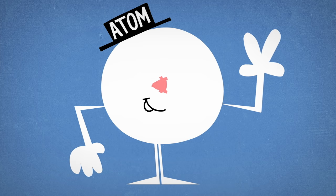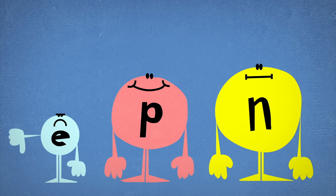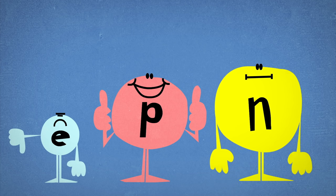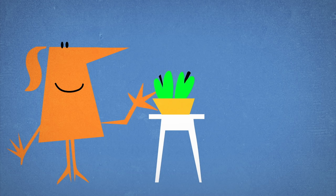All matter is made up of atoms that consist of three types of smaller particles: negatively charged electrons, positively charged protons, and neutral neutrons. Normally, the electrons and protons in an atom balance out, which is why most matter you come across is electrically neutral.